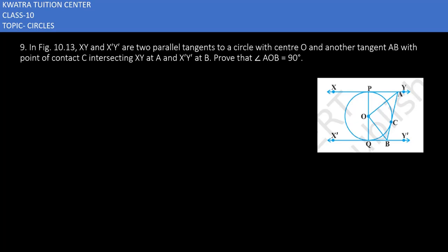Let's start with question number 9. It says XY and X'Y' are two parallel tangents to a circle with center O, and another tangent AB with point of contact C intersects XY at A and X'Y' at B. We have to prove that angle AOB is 90 degrees.